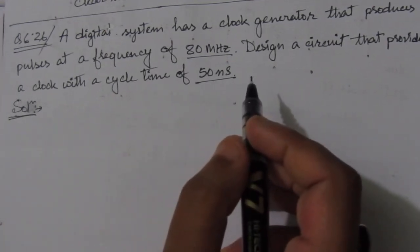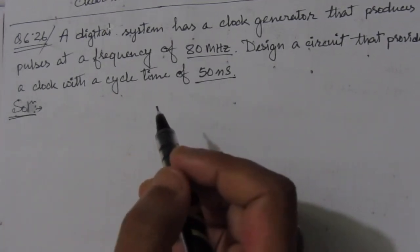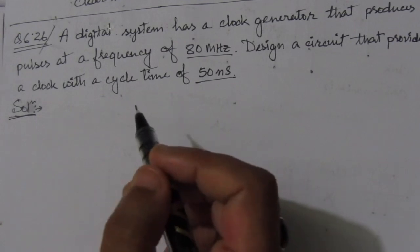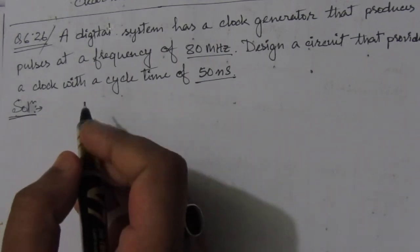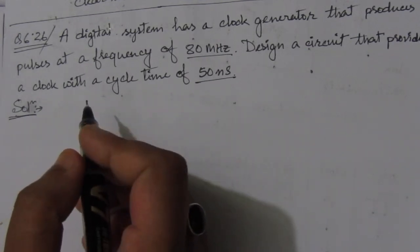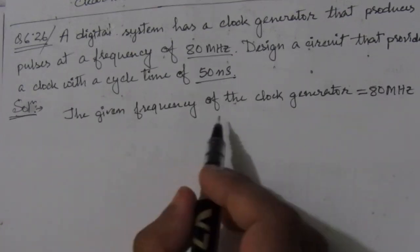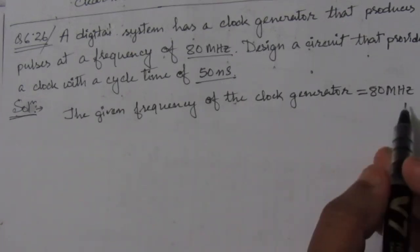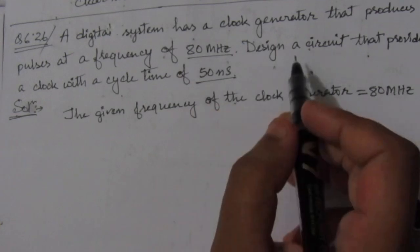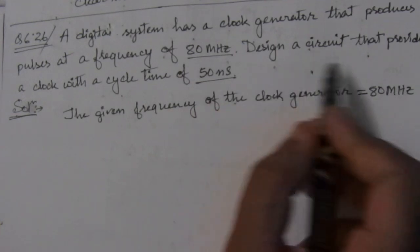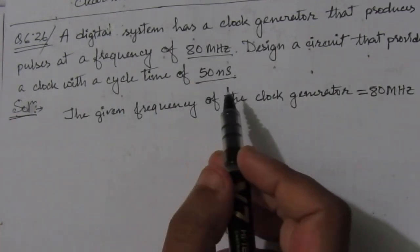For doing this, we can use a 2-bit counter — specifically a 2-bit ripple counter. The given frequency of the clock generator is 80 MHz, and we have to design a circuit with a clock cycle of 50 nanoseconds.